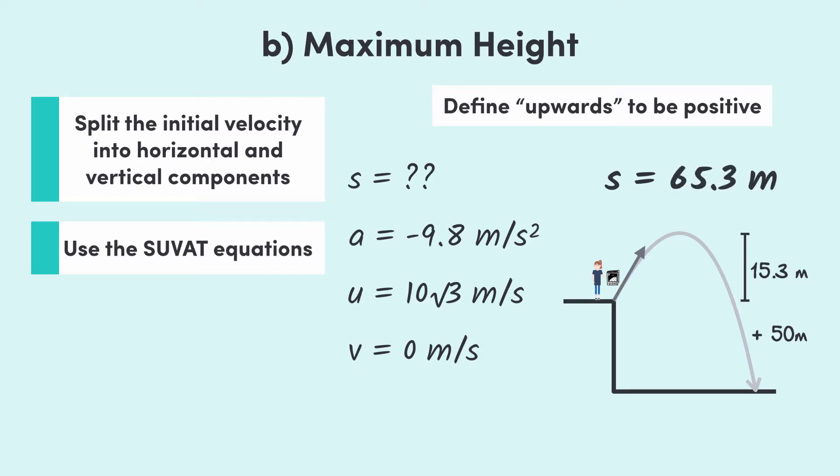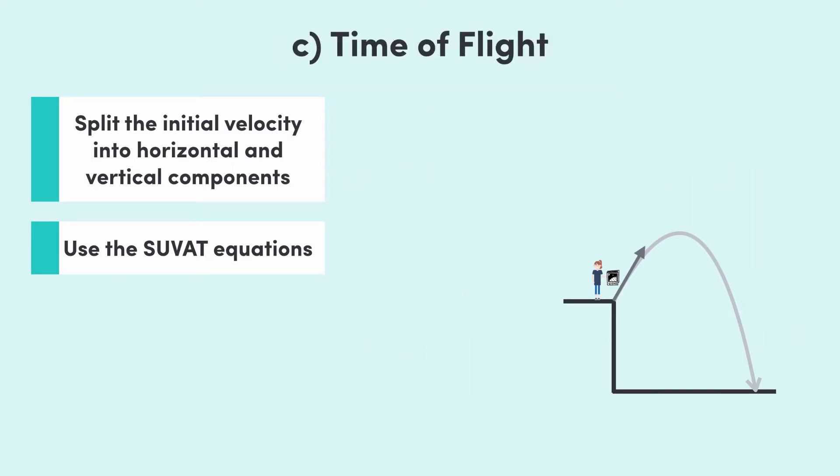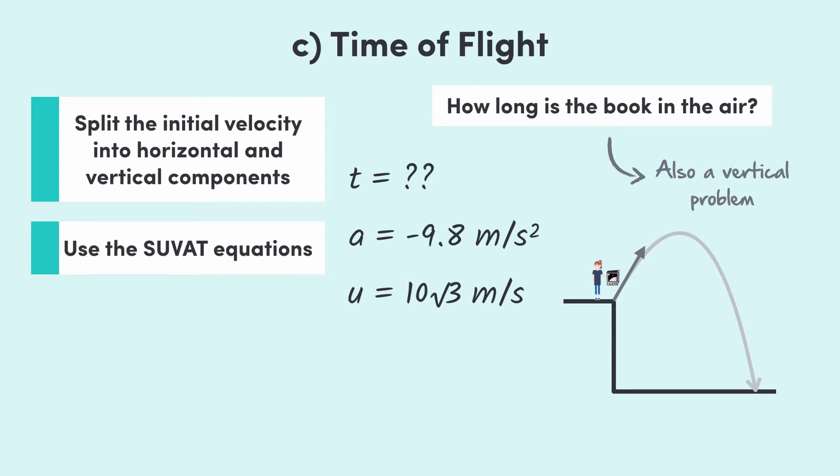Okay, part c shouldn't take us too long now since we've already done the splitting up of our initial velocity. Now, we're looking for how long the textbook is in the air, which is t. This kind of problem is also a vertical one, since we don't have enough information in the horizontal direction to solve it. So, we therefore know that a is again negative 9.8 meters per second squared.